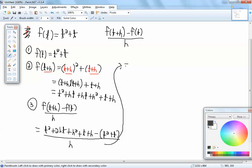So that's going to give us T squared plus 2HT, plus H squared, plus T, plus H. And remember, a negative in front of your parentheses flips the sign of everything inside. So this is going to flip the sign of the T squared and of the T. So it becomes a negative T squared minus T, all over H.